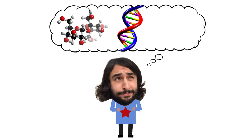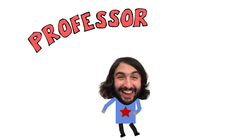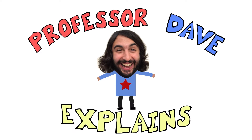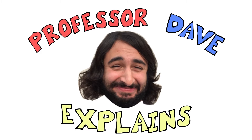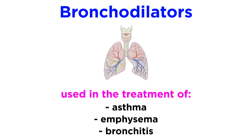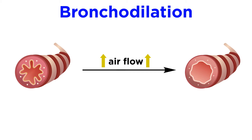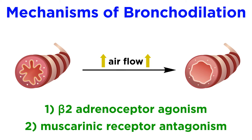Professor Dave Explains. In the previous tutorial, we introduced bronchodilators as a class of drugs which treat a collection of pulmonary diseases by reducing resistance to airflow in the vessels of the lungs. Let's now get more specific in terms of the mechanisms by which this pharmacological effect takes place.